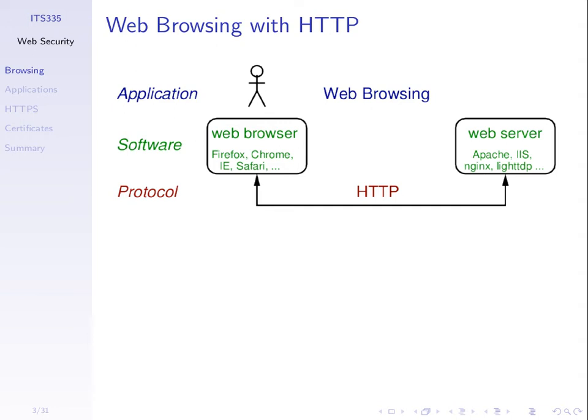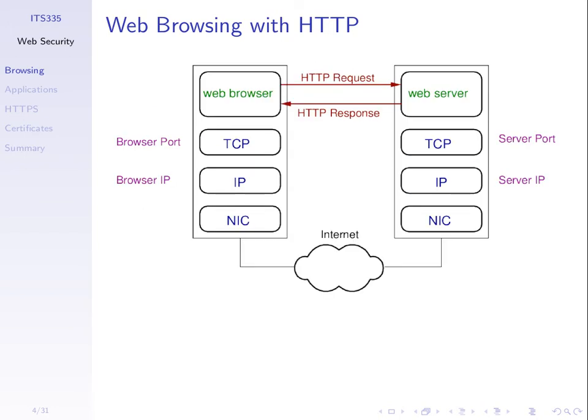Apache web server you may have seen in the lab, but there are others. At the protocol level, HTTP is a request-response protocol — the browser sends one request, the server sends one corresponding response. It's always one request, one response. We don't send a request and get back three responses containing the page and images separately. If there are images to download, we send another request for each image and each image comes back in its own response.